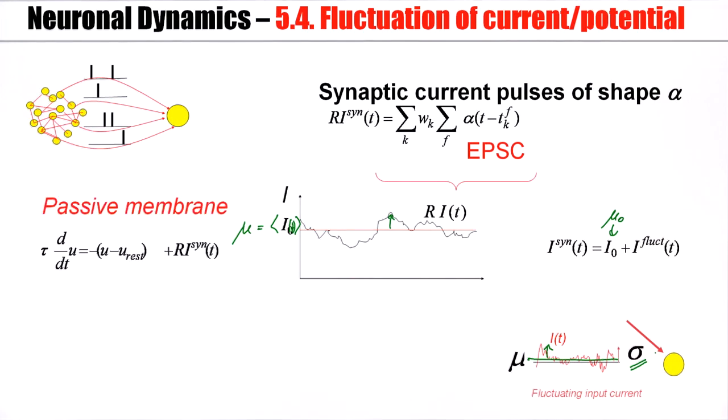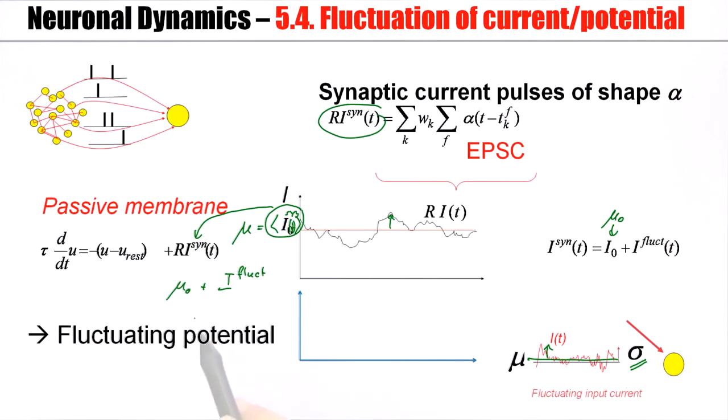So this is the input current. Now suppose that our neuron stays in the subthreshold regime. So the neuron can be described as a passive membrane. I have a leak term and I have an input. The input comes from the synapses. The input is exactly this guy here, the synaptic current, which I can write like this. This synaptic current has a mean part and it has a fluctuating part.